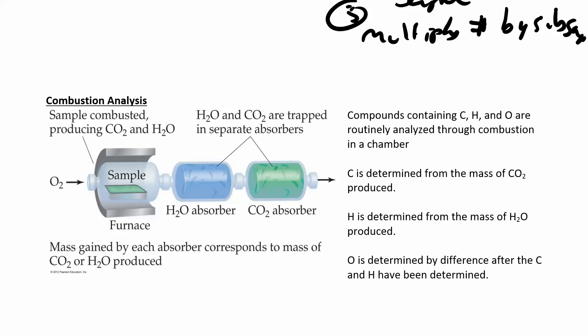If you're curious how mass percents are obtained, you can set up a combustion analysis. In combustion, you take a hydrocarbon and blast it with oxygen inside a furnace, then collect the products. You weigh the collector before and after — combustion always produces water and carbon dioxide as products.